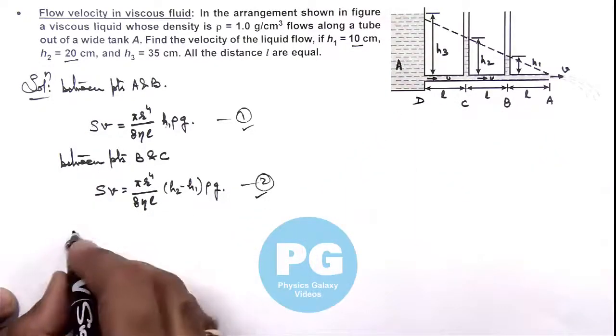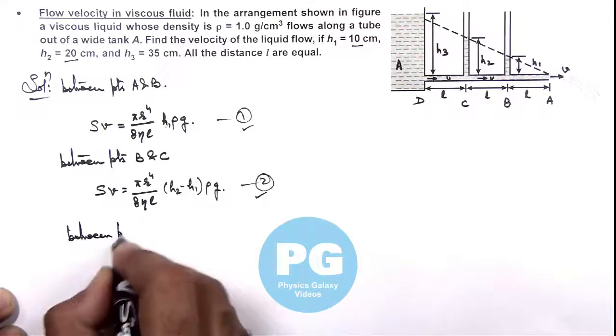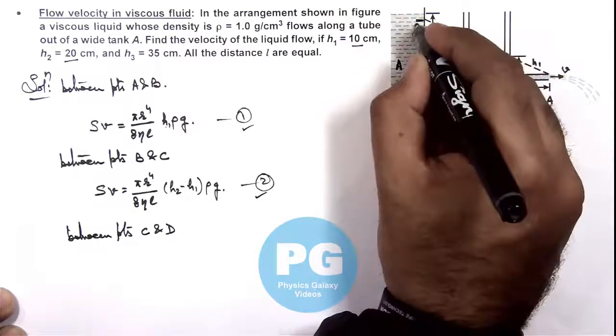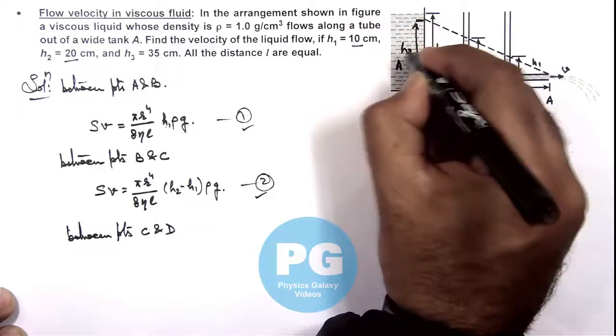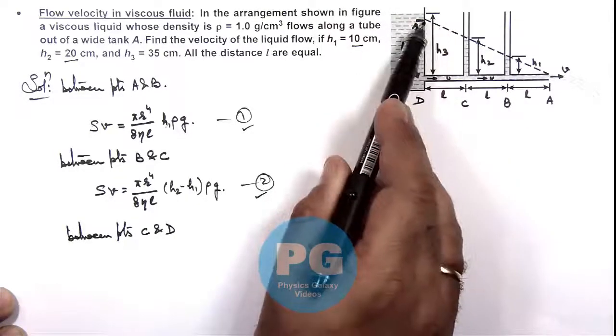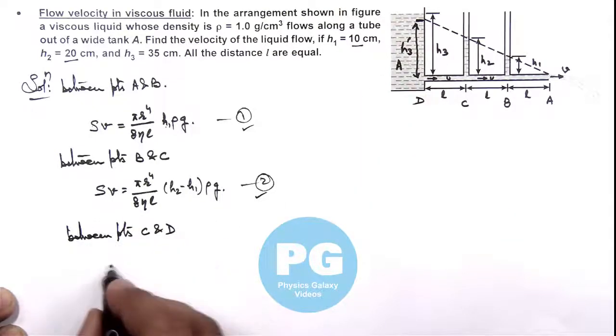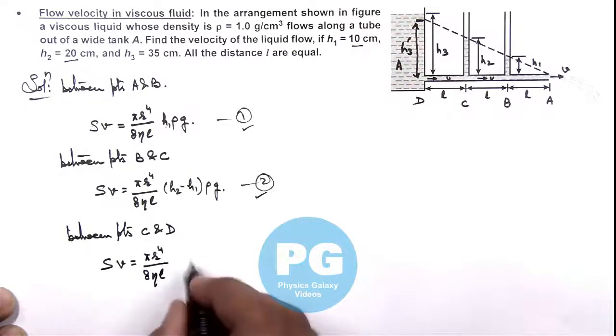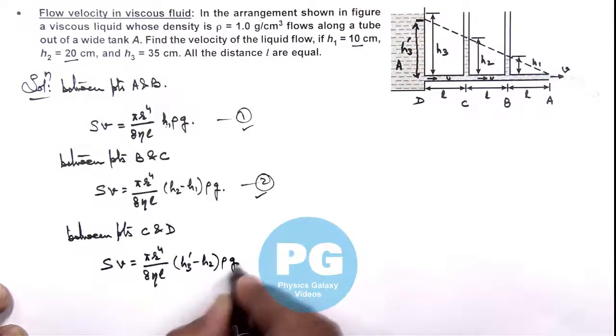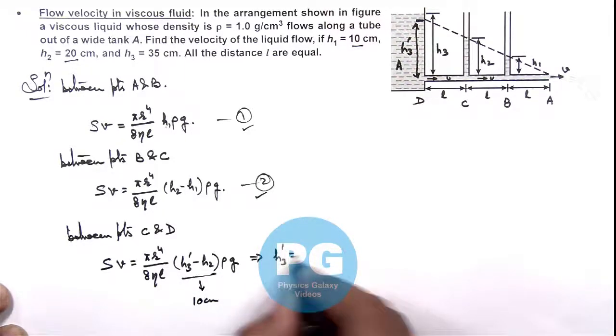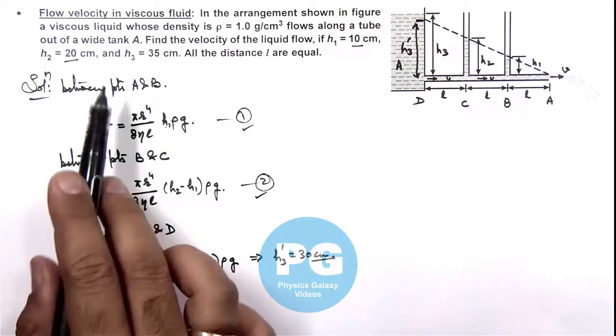And if we talk about this point D, then we can write between points C and D. Here if we consider up to this level, say this height is h3 prime which is not specified in the problem because this is the level which is being maintained. So we can directly write between points C and D: Sv equals πr⁴/(8ηl), and this should be equal to (h3 prime - h2) multiplied by ρg. And on calculation as this should be equal to 10 centimeter, we can see h3 prime equals 30 centimeter, because h2 is given as 20 centimeter.